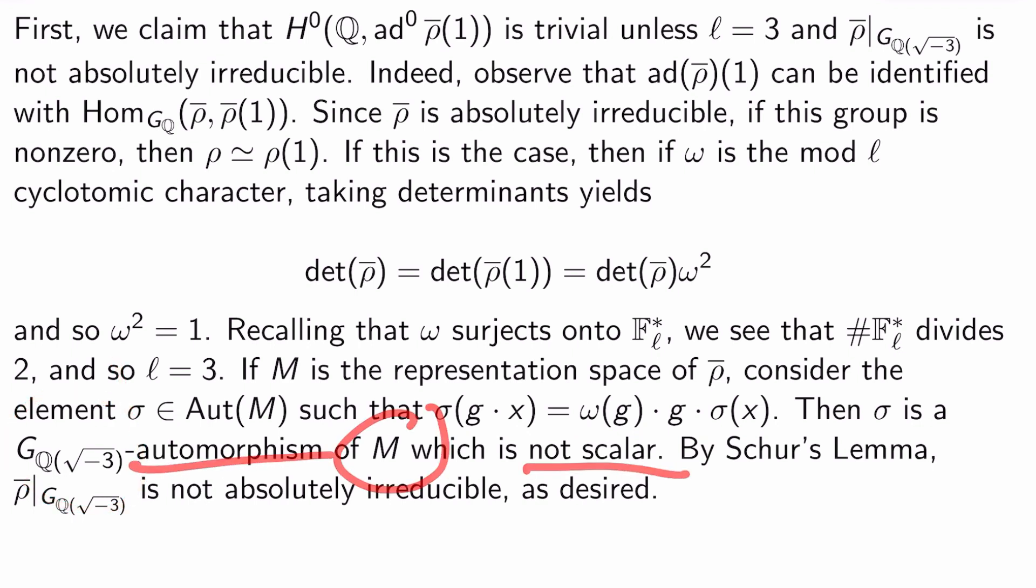This is a G_{Q(√-3)} automorphism of M, which is clearly not scalar. And so by Schur's lemma, ρ̄ restricted to the Galois group of Q adjoin root negative 3 is not absolutely irreducible. As desired, I have just shown that l has to be 3 and that representation cannot be irreducible. So that proves this claim up here. So let's continue.